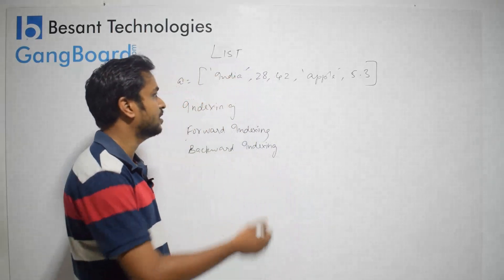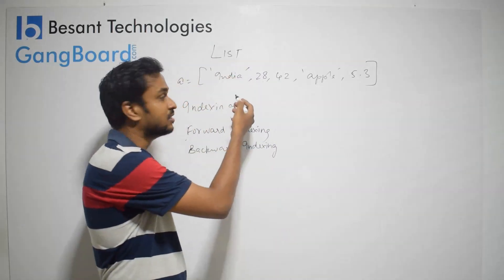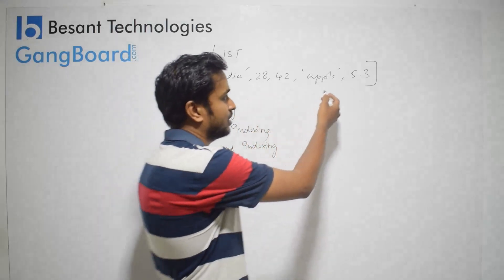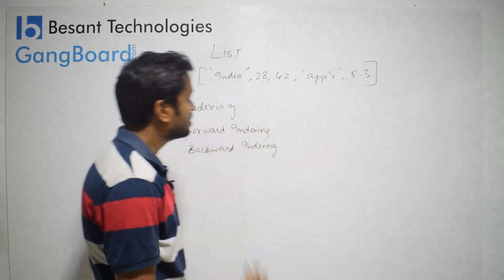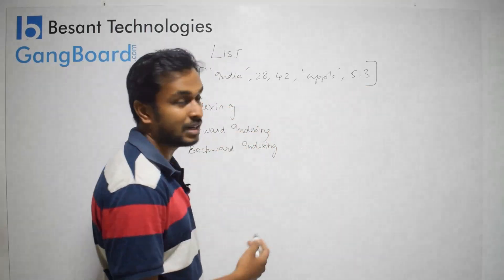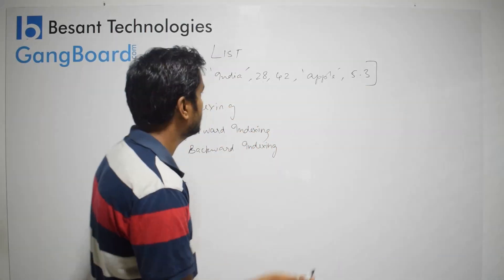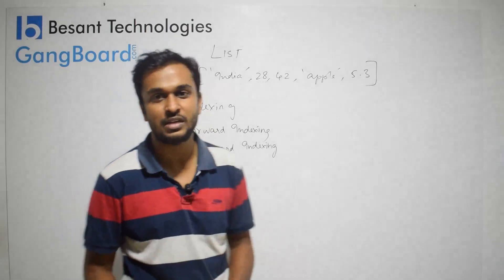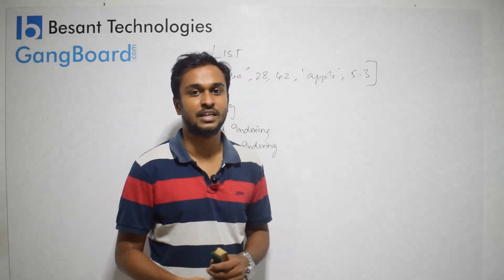Let's look at a simple example. We have 'India' as a string, then 28 as an integer, then 42 as another integer, then another string, then 5.3 as a floating decimal. In a single list, I have a string, a float, and an integer. So we can store different data types — it is nothing but a collection of items, just like an array but with different data types.